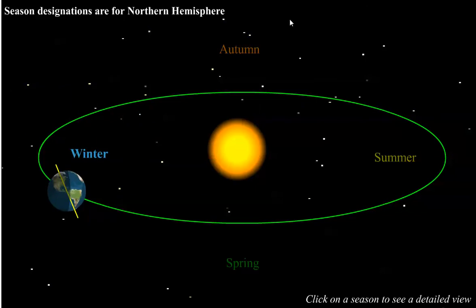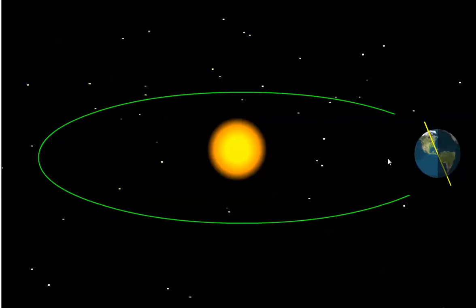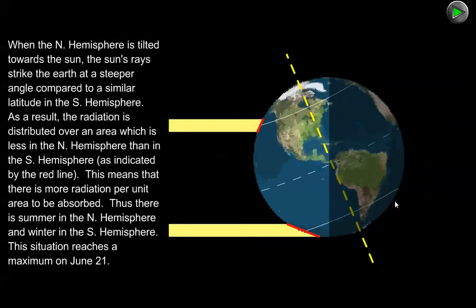If we click on summer, we can see the situation in the northern hemisphere and why it's warmer in the northern hemispheric summer. When it's summer in the northern hemisphere, the northern hemisphere is tilted toward the sun, so the sun's light is striking the surface more directly and the heating power of the sun is greater in the northern hemisphere during summer.